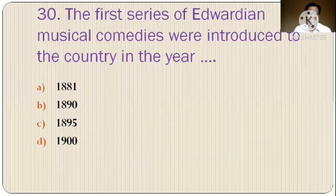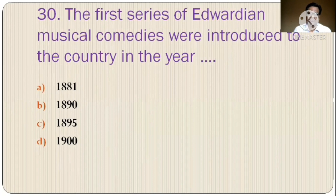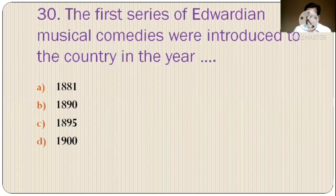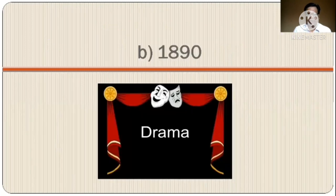Question 30: The first series of Edwardian musical comedies were introduced to the country in the year? The options are: A) 1881, B) 1890, C) 1895, D) 1900. The correct option is option B, 1890.